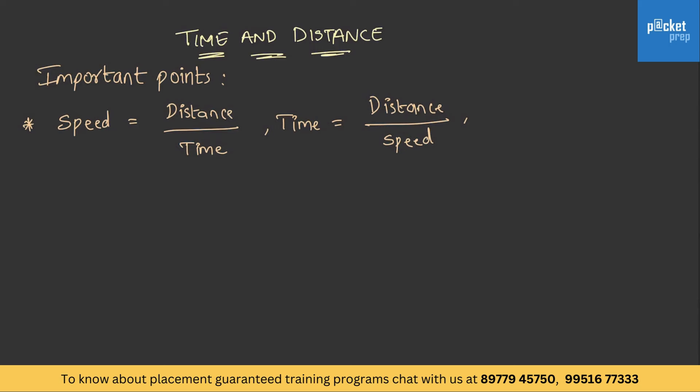And we also know that distance is equal to speed into time. For the conversion from x kilometers per hour to x meters per second, the value should be multiplied by 5 by 18.